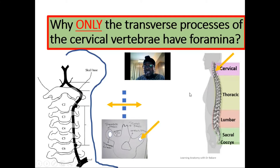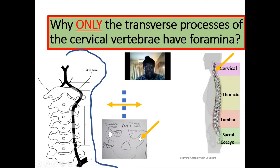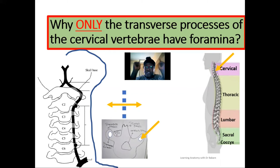This foramen is created for a reason — to allow the passage of the vertebral artery, highlighted here. The vertebral artery is a branch of the subclavian artery, which emerges from the arch of the aorta. The target of the vertebral artery is to enter the neurocranium to supply the brain tissue.